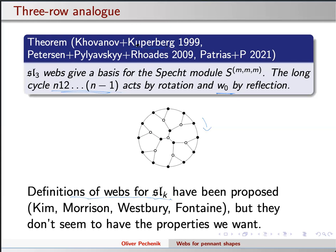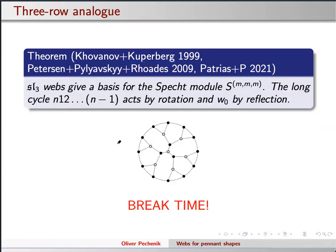For a long time people have been looking for a good definition of webs in higher ranks. Kuperberg works in general type but only up to rank two. With SL3 you can think about other things, but what are you doing with SLK? People have made definitions and they're probably even the right definitions, but they don't quite do the things we want for combinatorial purposes. Instead, we're going to go back to the pennant story — I'll tell you how to see it as some explicit set of polynomials, and there's going to be something like a web basis there. These planar diagrams will give corresponding polynomials, and a lot of the same nice things will happen.